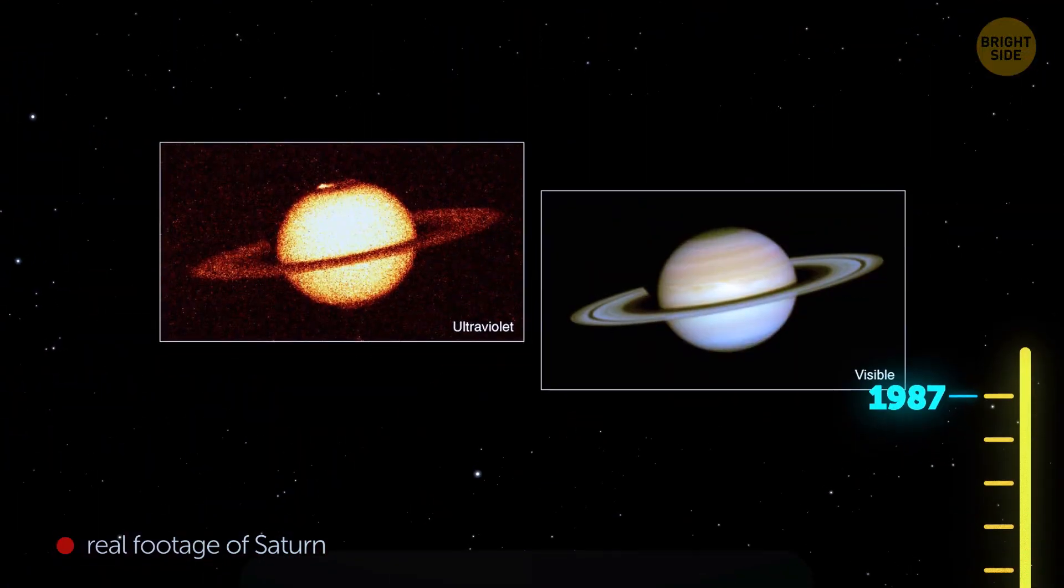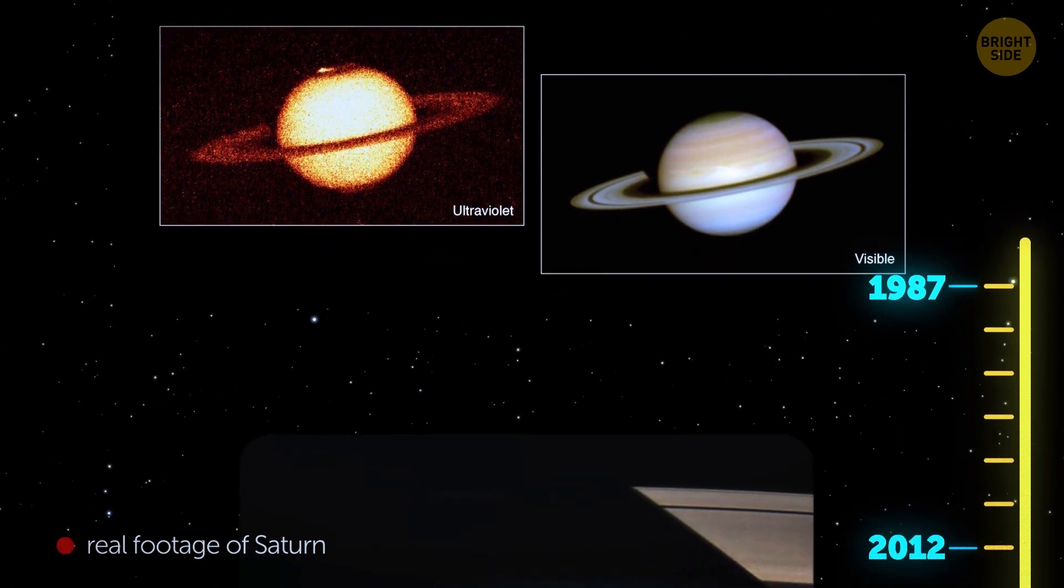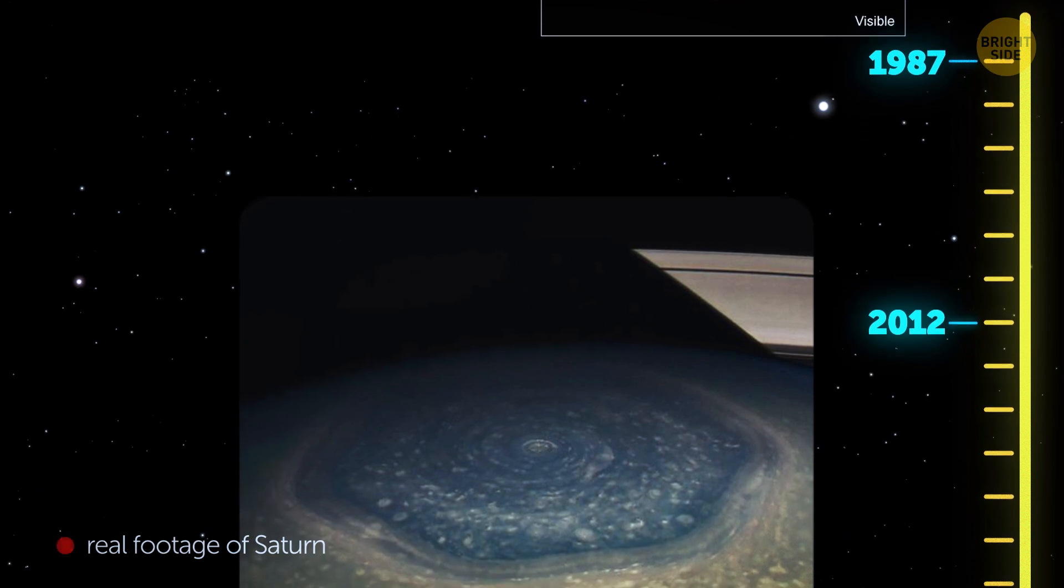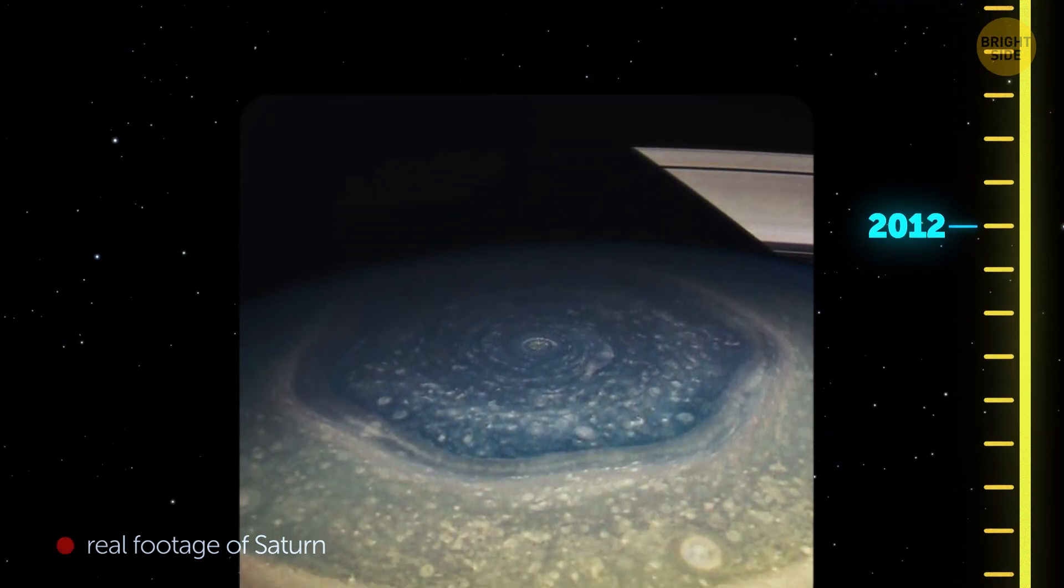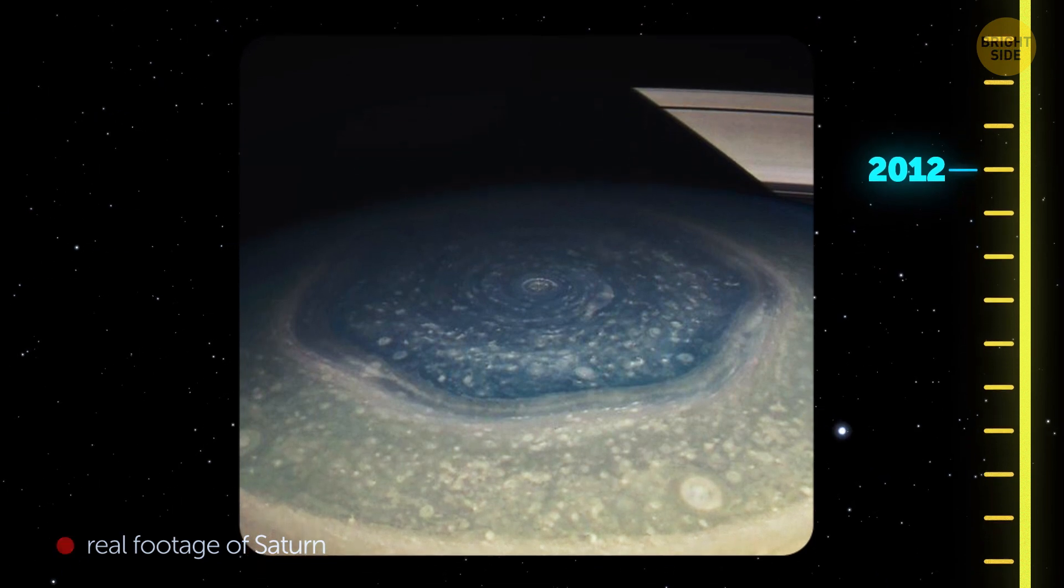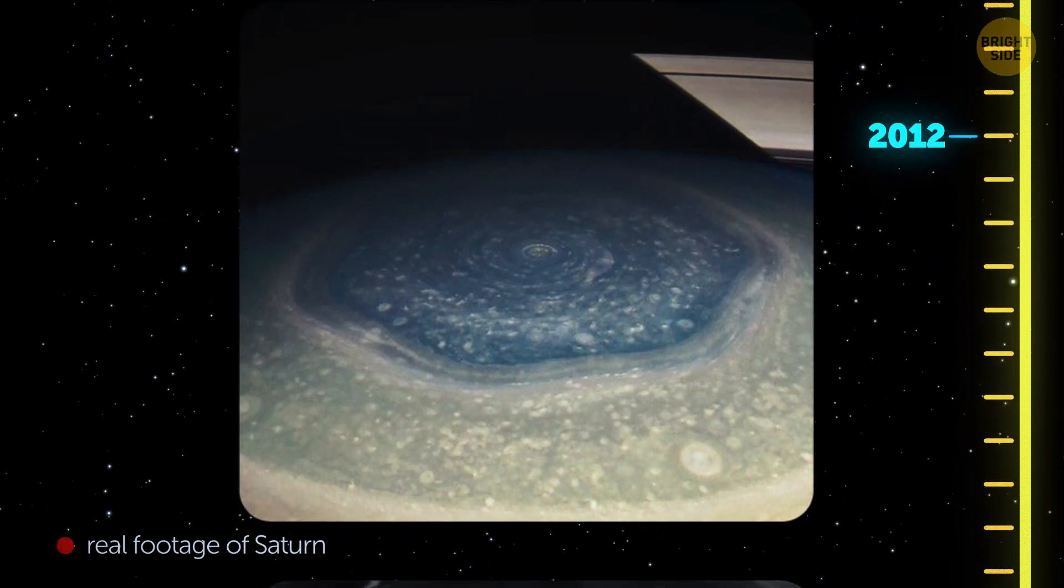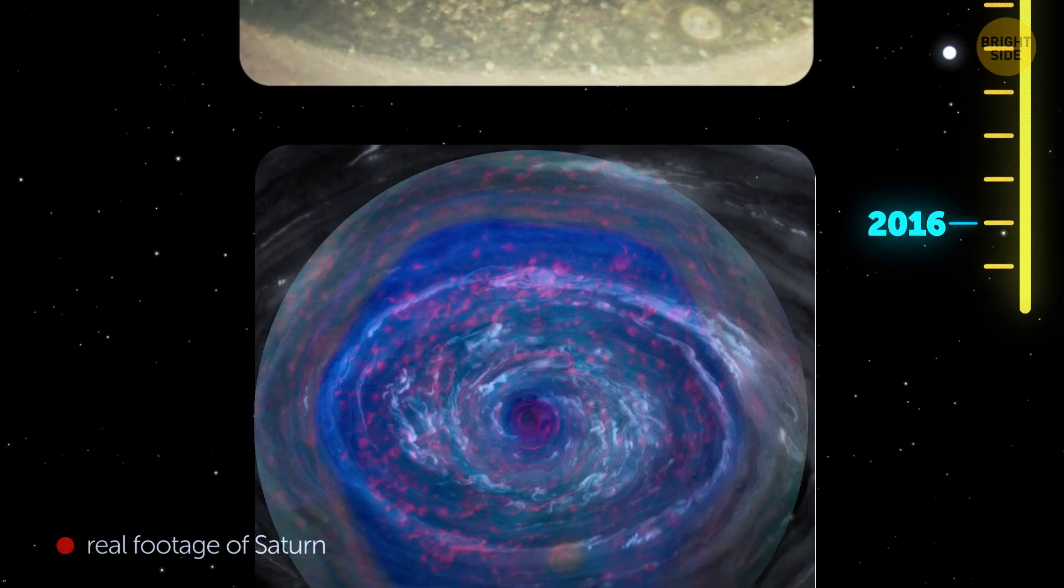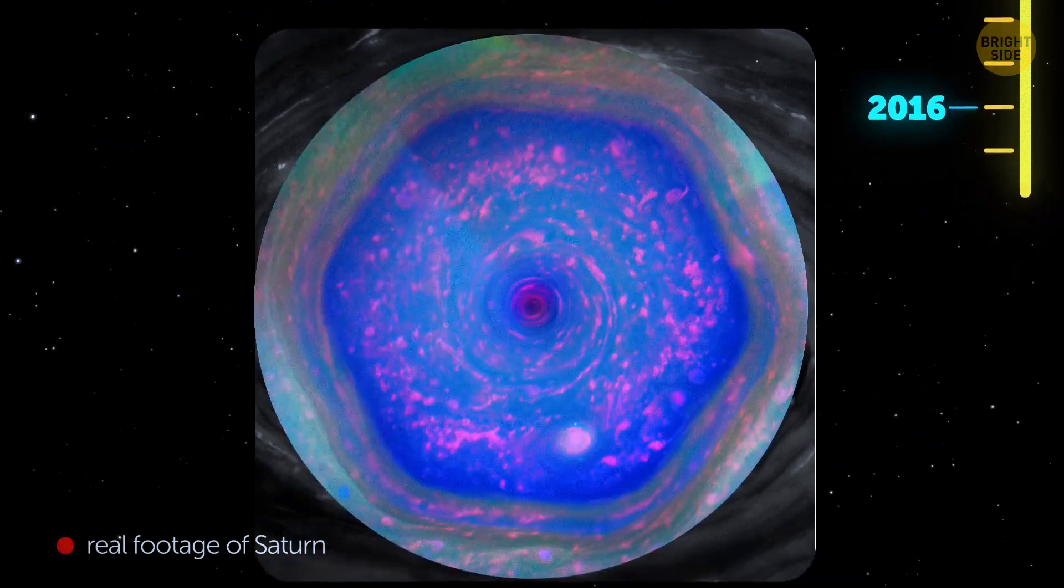After the hexagon was first discovered in 1987, it remained hidden in darkness, up to the moment when sunlight exposed it again. Soon afterward, the Cassini spacecraft, designed to explore the Saturn system, provided a series of captivating images and even a video of the hexagonal storm.